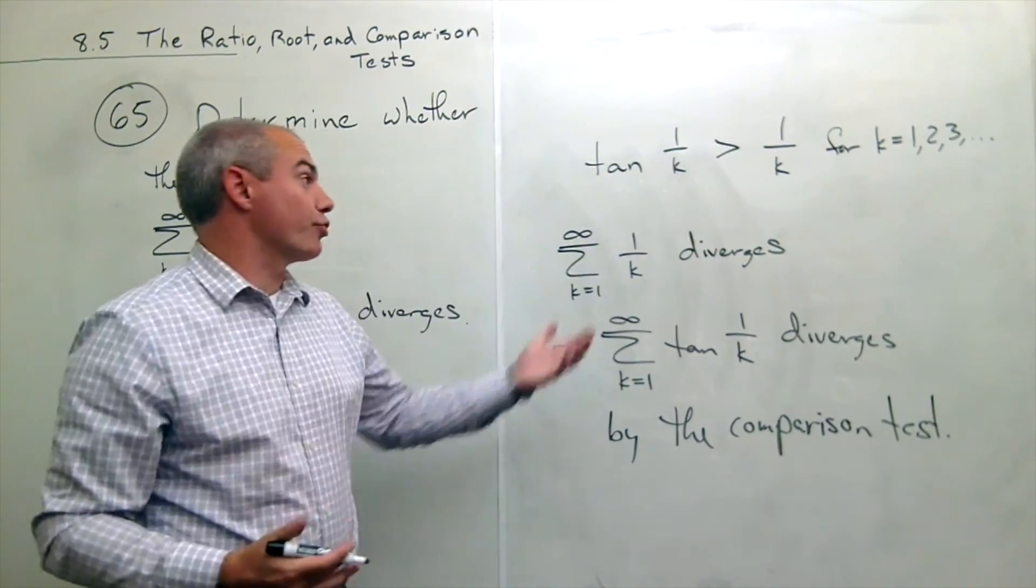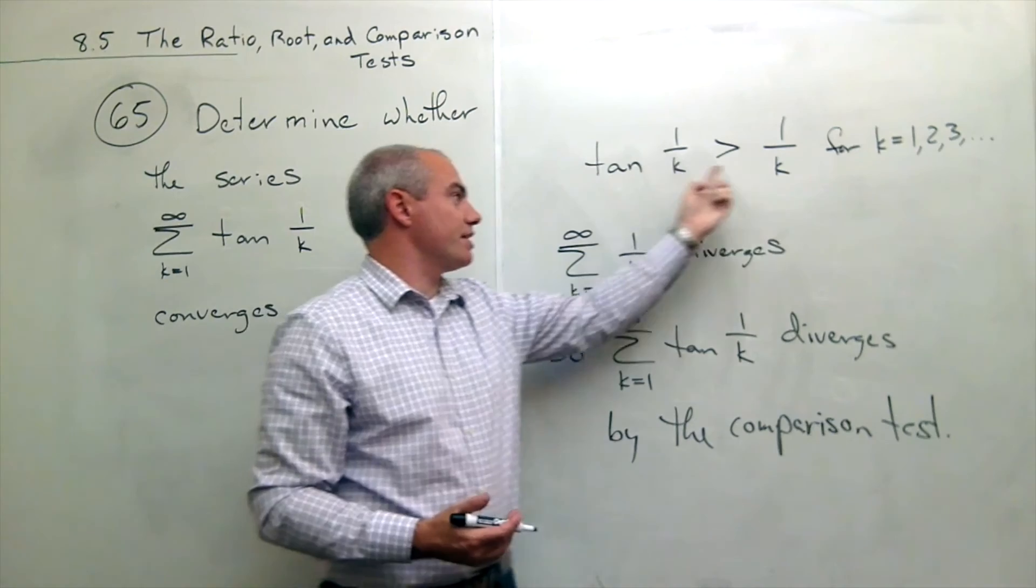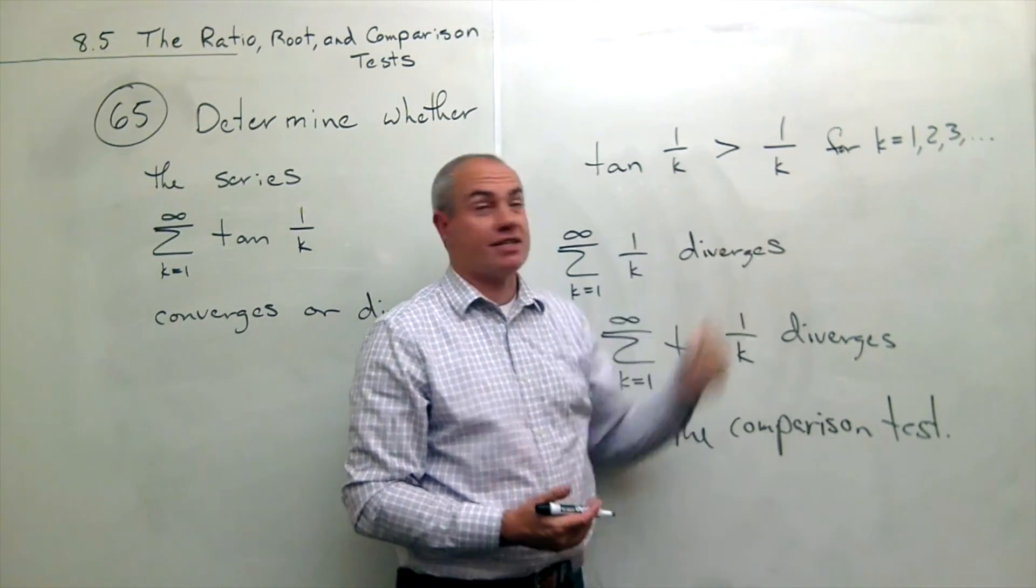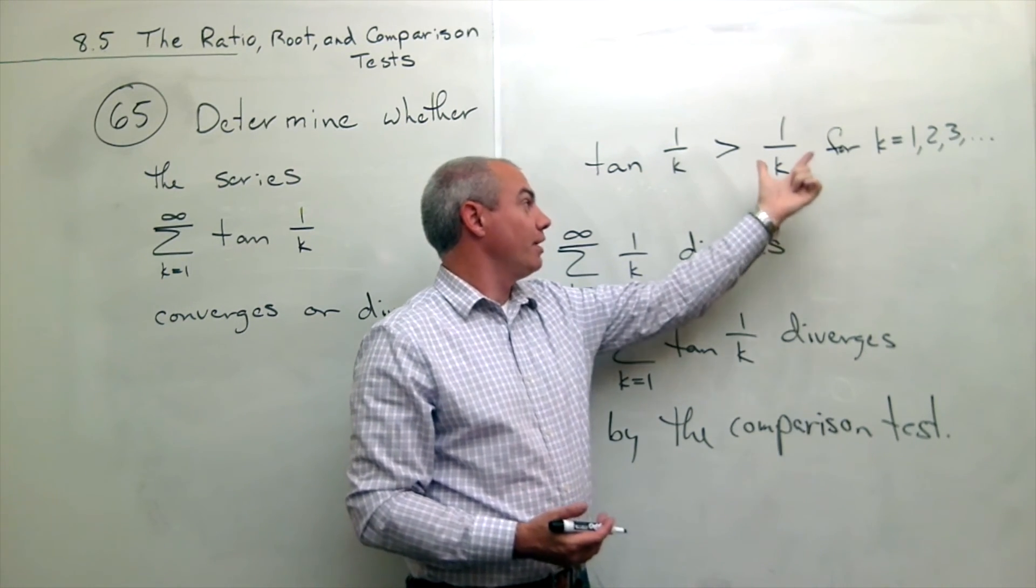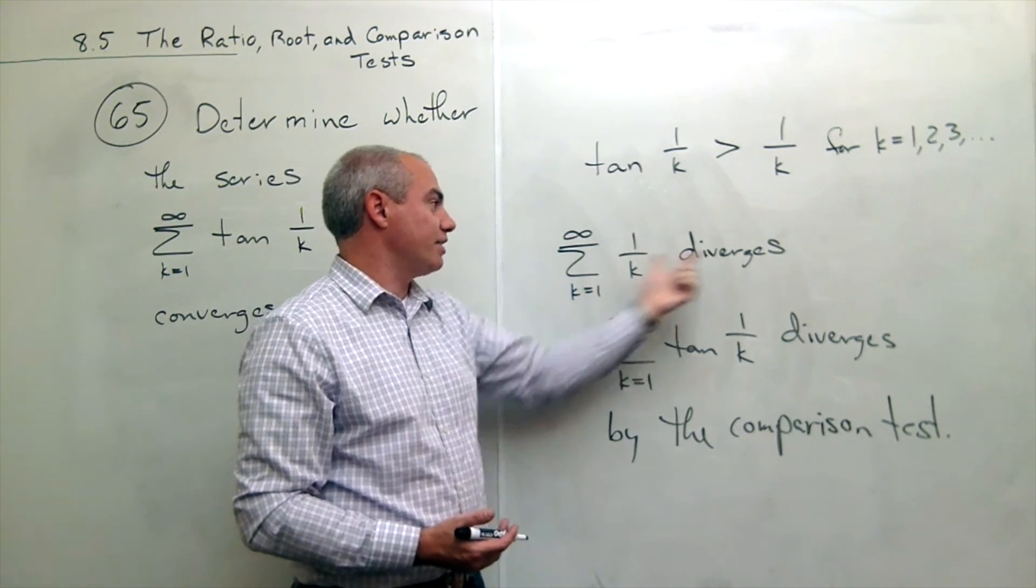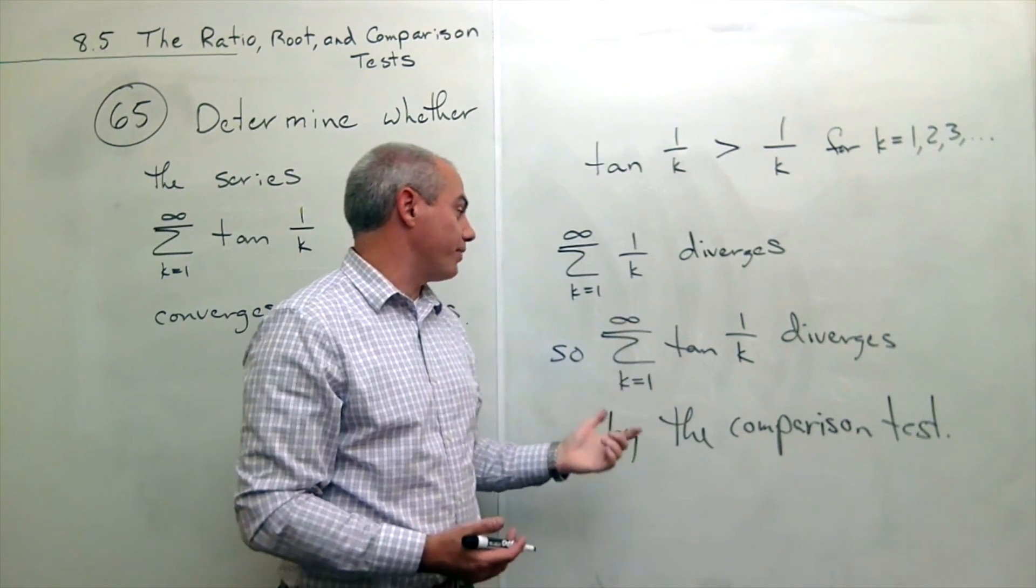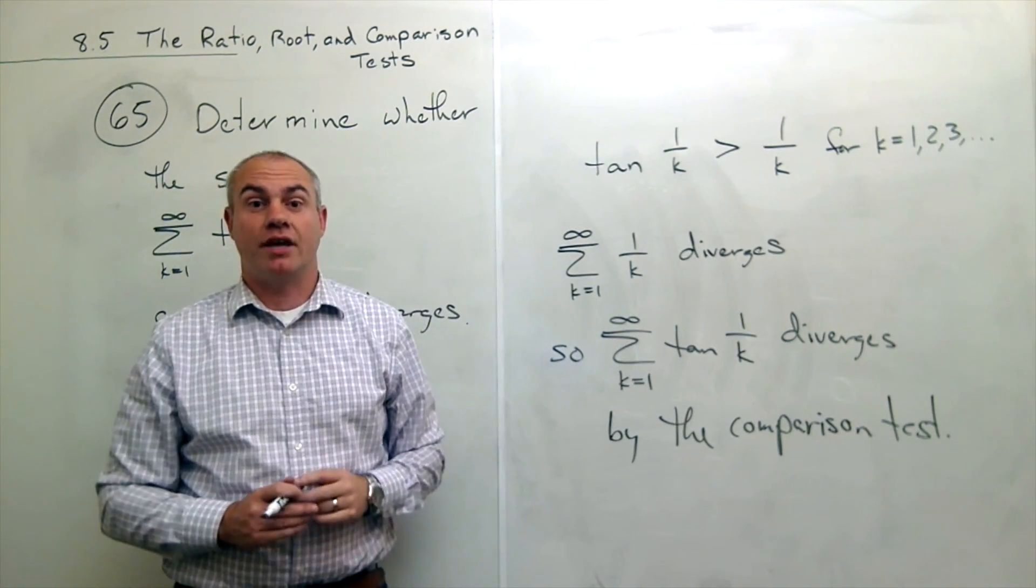Because in this case, I just directly compared these two sequences and said, this sequence is just plain bigger than this sequence. So what this guy sums up to must be smaller than what this guy sums up to. Well, this guy diverges to infinity. If infinity is smaller than something, then that guy must be infinity too. And he diverges. And we are done.